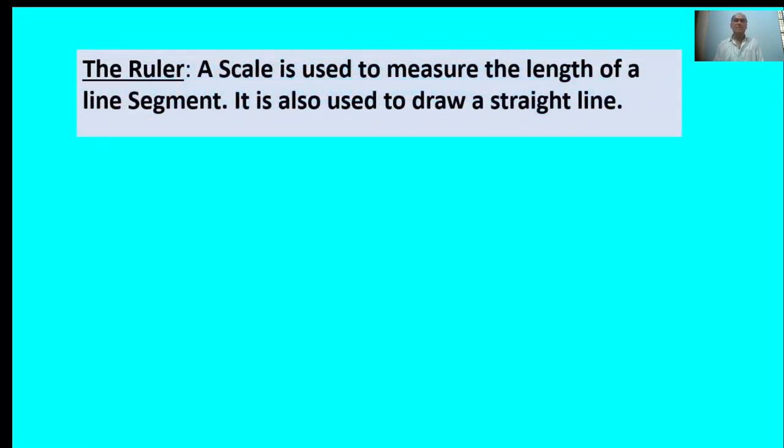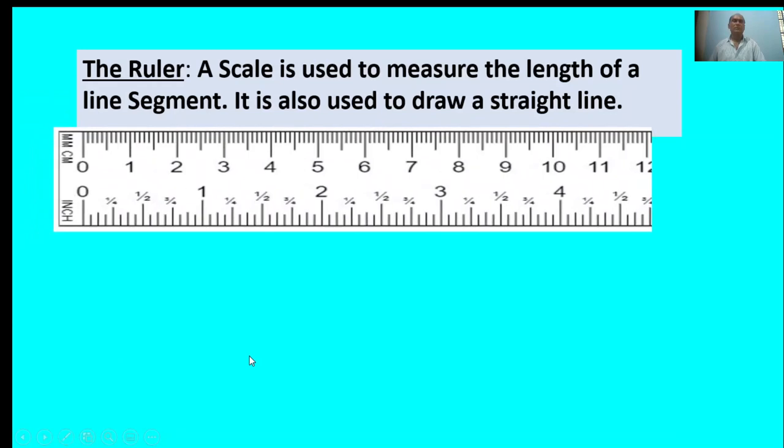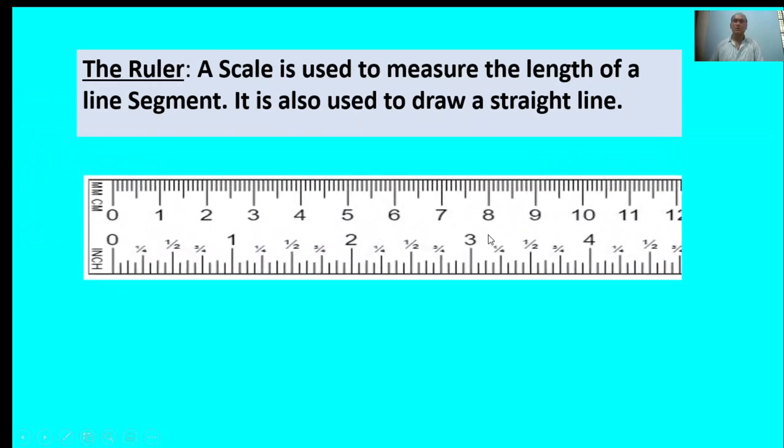First, the ruler. A scale is used to measure the length of a line segment. It is also used to draw a straight line. This is called a ruler.